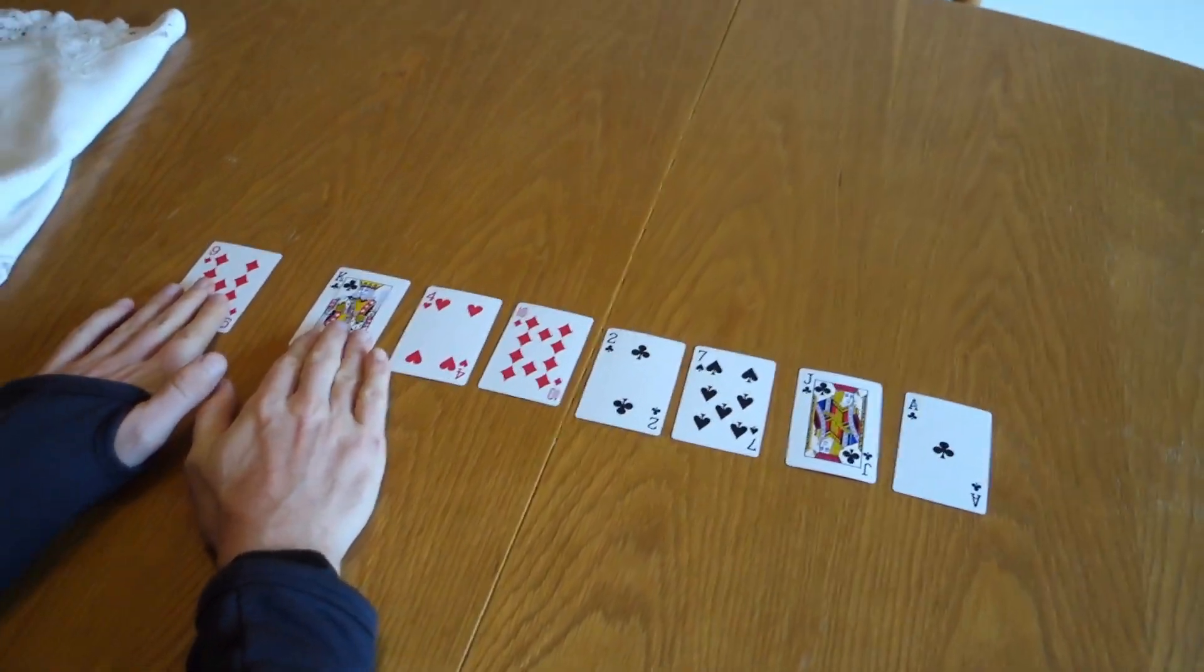So we start with the King. King versus a nine. King is bigger than a nine, so it doesn't need to go before it. Then the four. Is four less than a King? Yes. Is four less than a nine? Yes. Done.